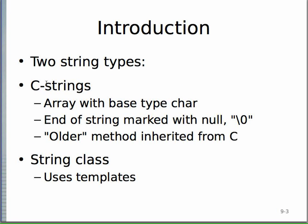A C string is just a raw array with the base type of char. Char is just a byte in C++. If you remember from Java, chars are 16 bits or two bytes because Java supports Unicode. In C, chars are just eight bits.